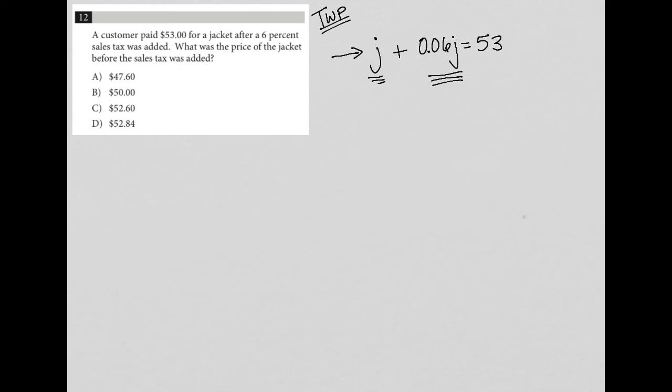J plus 0.06J is the same as 1.06J. And that's going to be equal to 53. And then I can divide both sides by 1.06.